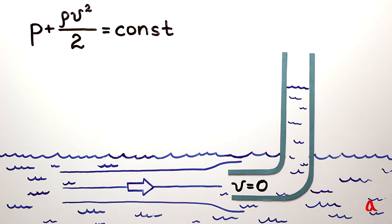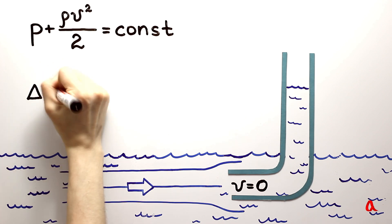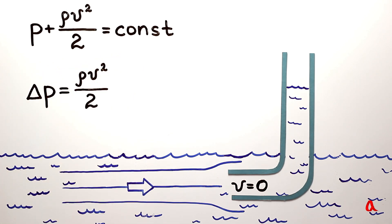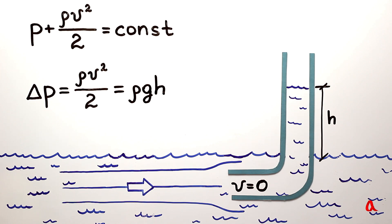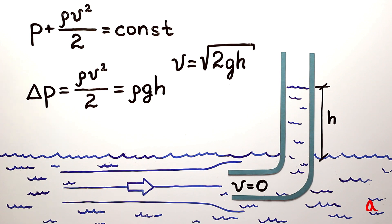At the inlet of the tube, the speed of the water equals zero, so the dynamic pressure equals ρ multiplied by v squared divided by 2. This excessive pressure is balanced by hydrostatic pressure, which is ρgh. Thus, we find the dependence between the height and speed. Isn't it a familiar formula? A body thrown vertically upwards with speed v would go up exactly to this height, since Bernoulli's principle is nothing other than the energy conservation law for flowing water or gas.